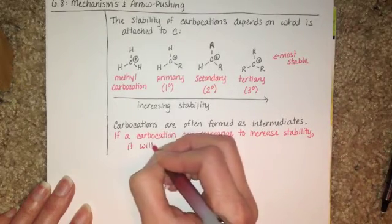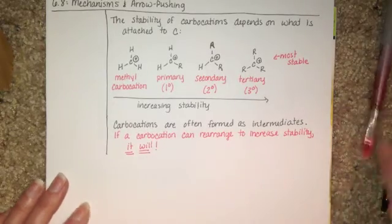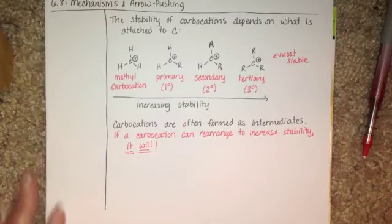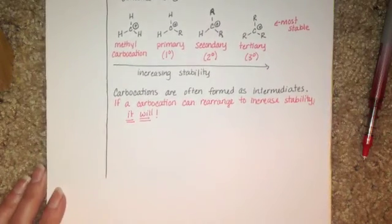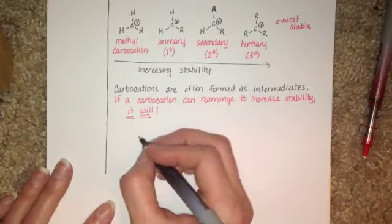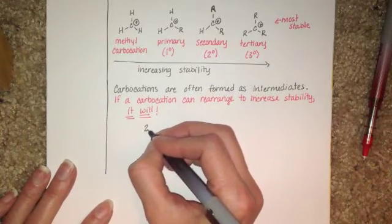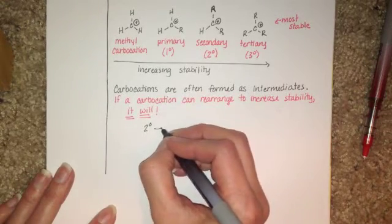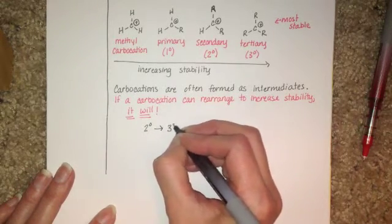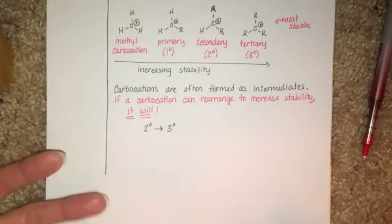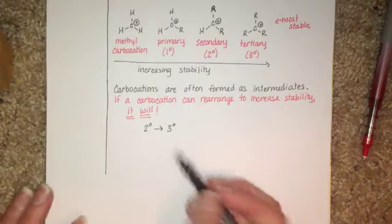This is something that is one of those concepts that we're going to come back to all year long, and we're always going to be looking at carbocations and we're always going to be asking ourselves, can this carbocation rearrange to find something that's more stable? For example, if you have a reaction that produces a secondary carbocation as an intermediate, it is going to attempt to rearrange itself to make a tertiary carbocation. It's going to try to find a way, and maybe it can't, but it's going to try.